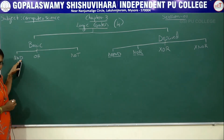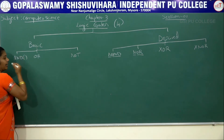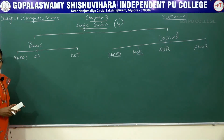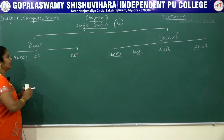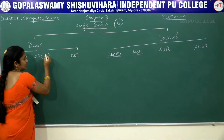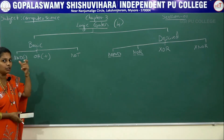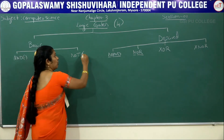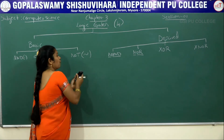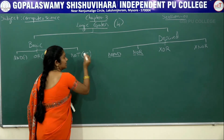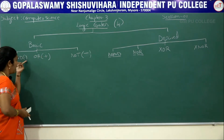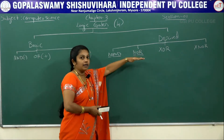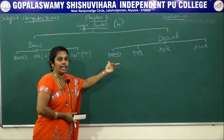In basic gates, for AND gate we are using the symbol dot in between the operands — variable dot operator — to represent the AND operation. Whereas for OR we are using the plus symbol to represent the OR gate. For NOT gate, which is also called the inverter gate, you can use the negation form or the bar format to represent the operation.